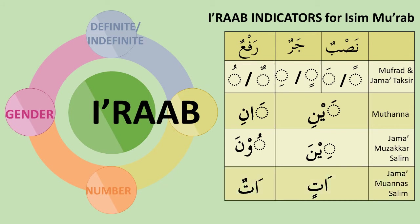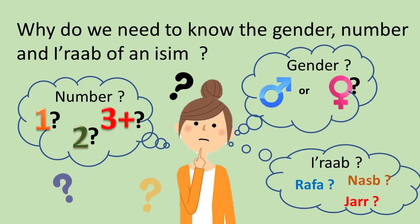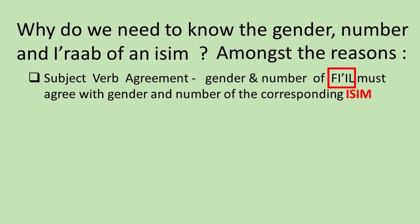If you have forgotten the topic of i'rab, you can refer to the previous Lesson 7 video. Now, you may be wondering why we learn the four properties of isim — why do we need to know if the isim is muzakkar or mu'annas, its number, and its i'rab status? Just like in English, Arabic too must adhere to subject-verb agreement.